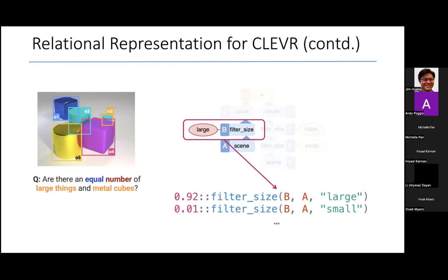For example, a semantic parser might return that this AST node B is filtering objects described by AST node A and has attribute large, but only with a certain probability. And then it will have other possibilities with certain probabilities as well.